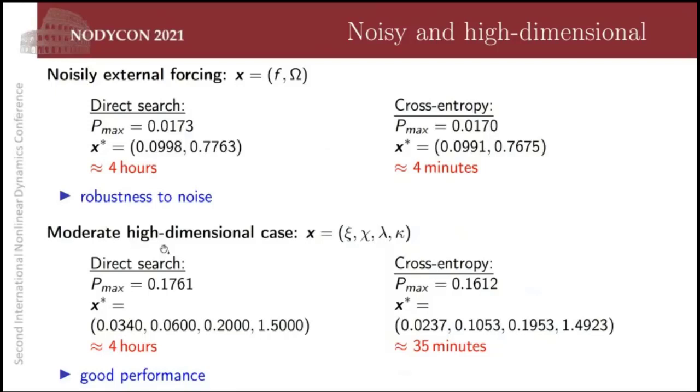And if we increase the dimension, instead of considering two but four design variables, the brute force also took four hours. We lost a little bit of performance here, but we can obtain the solution in 35 minutes. So it's a very competitive algorithm.